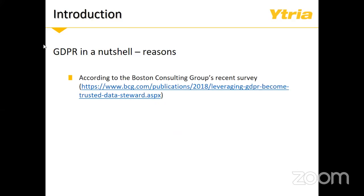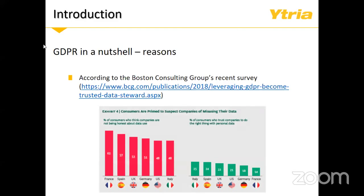I came across this paper from the Boston Consulting Group last night — it's a really awesome paper that introduces the reasons why the GDPR is so important. Based on their survey in six different countries in the EU, the median of consumers who basically don't trust companies — who believe companies are not being honest about the way they use their personal data — is about 52%. When you look at France specifically, 62% of people do not trust what companies say about dealing with their data, which is sort of the reason for this whole thing in the first place.